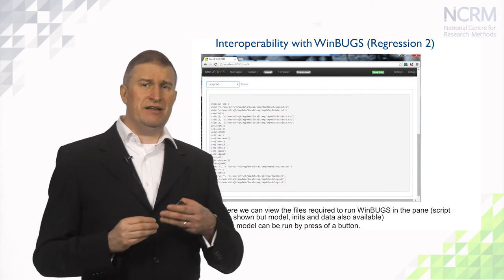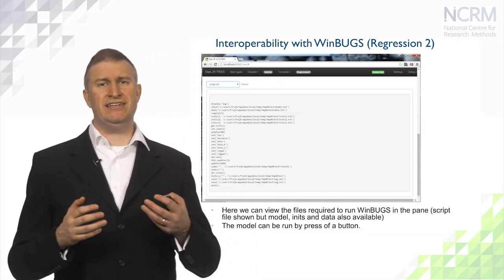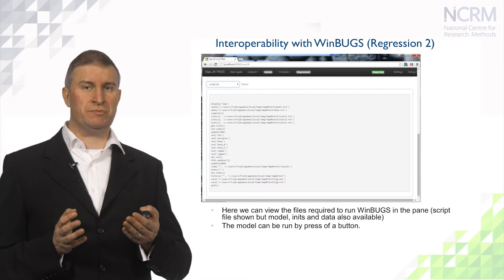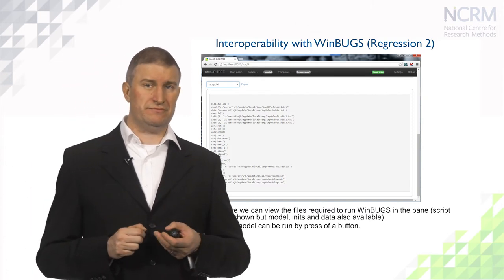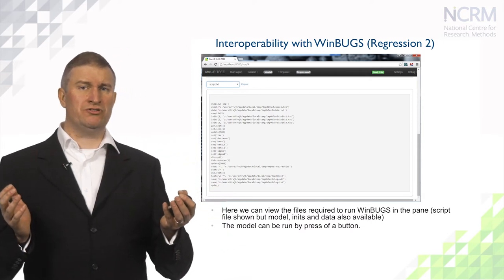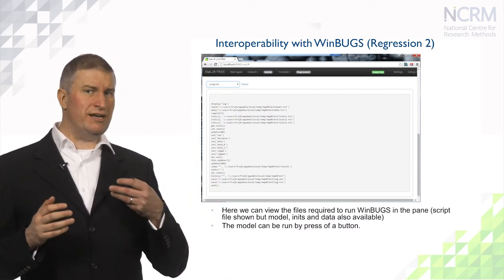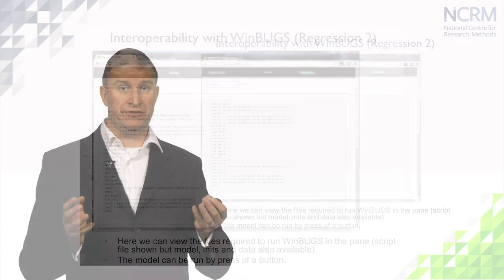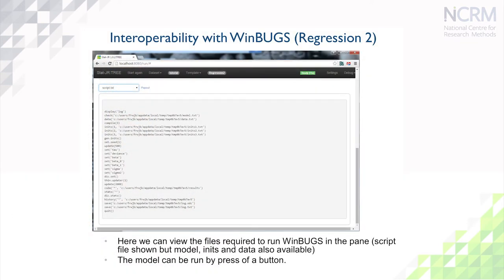Among the objects created when WinBUGS has been selected, we see a script file. This file contains the commands required by the WinBUGS package to fit the model. There are other files that Stature will create for use with WinBUGS — these will identify the actual data in the correct format for WinBUGS, the initial values, and the model itself. Then when we click run, WinBUGS will fire up in the background, fit the model and return the estimates as we saw with the eStat engine. So for a novice user, you will see no difference — you will just run a different package in the background and get a different set of estimates.